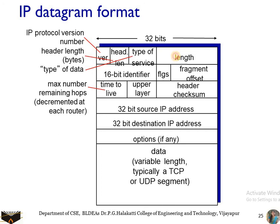Next we have the protocol field, referring to the upper layer protocol. This field is used when an IP datagram reaches its final destination. The value indicates the specific transport layer protocol to which the data portion should be passed. For example, a value of 6 indicates the data should be passed to TCP, and a value of 17 indicates it should be passed to UDP.